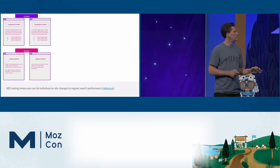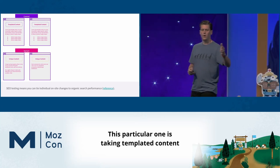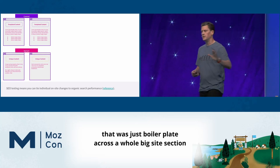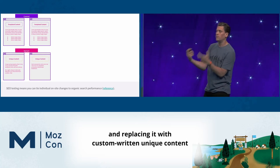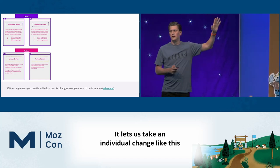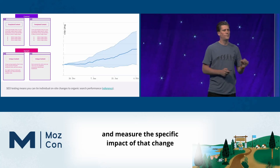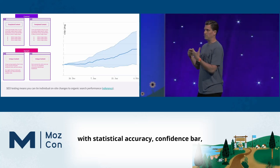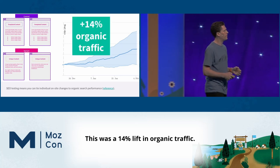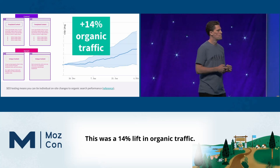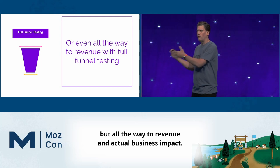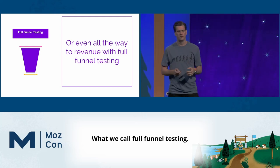What SEO testing lets us do is take individual on-site changes. So we have a hypothesis — this particular one is taking templated boilerplate content across a whole big site section and replacing it with custom-written, unique content for every single page. It lets us take an individual change like this and measure the specific impact with statistical accuracy and confidence. This particular one was a big win — a 14% lift in organic traffic. You can even take this to the next level and measure all the way to revenue and actual business impact — what we call full funnel testing.